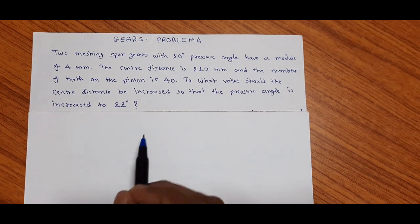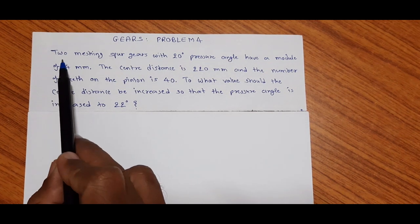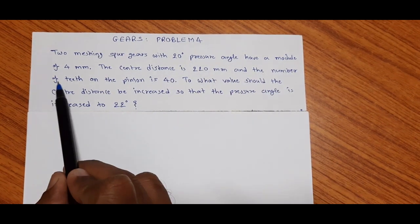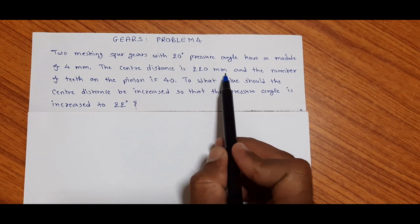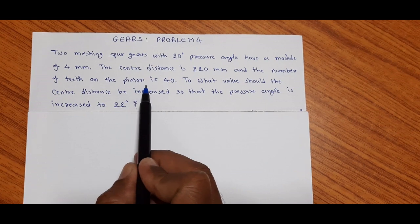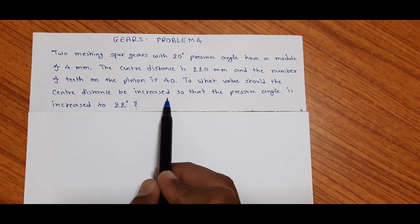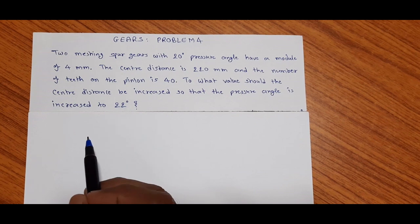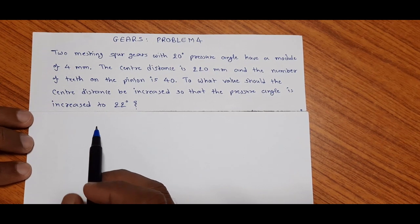Dear friends, we are again here with the problems — the fourth problem of gears. The data is like this: two machine spur gears with 20-degree pressure angle have a module of 4 millimeter, the center distance is 220 millimeter, and the number of teeth on the pinion is 40. To what value should the center distance be increased so that the pressure angle is increased to 22 degree?